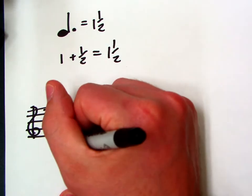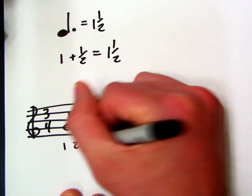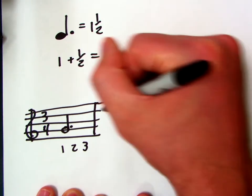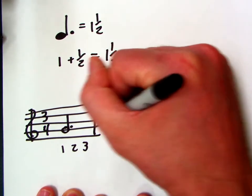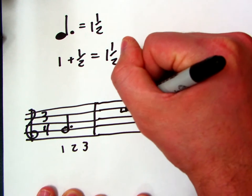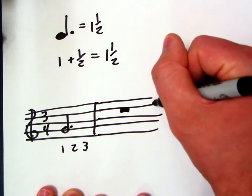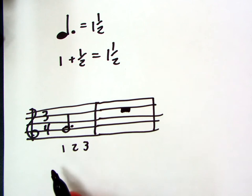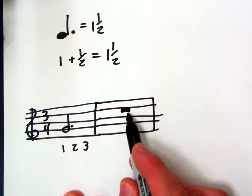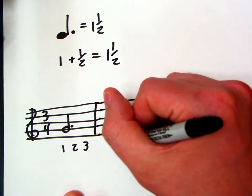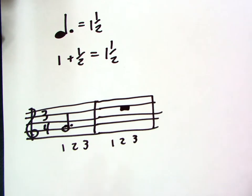This one note can fill up a full measure in three-four time. A full measure, so it's worth three beats, right? One, two, three. Just like a whole rest can fill up a full measure with rest in three-four time. Okay, so now we have this dotted half note worth three beats, and we have the whole rest worth three beats also. As long as we're in this time signature.